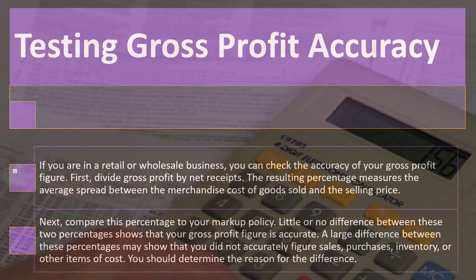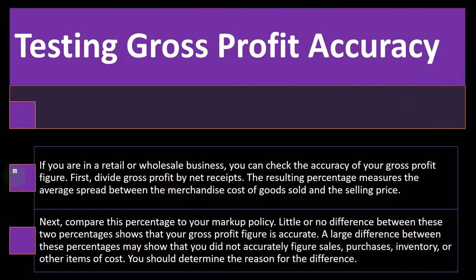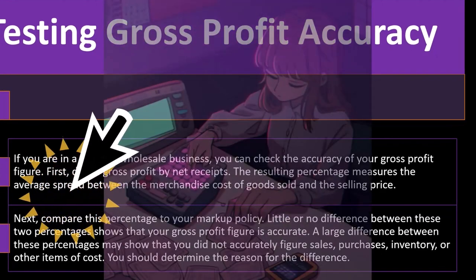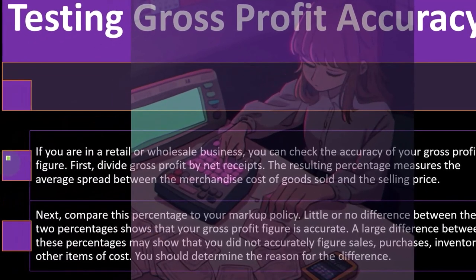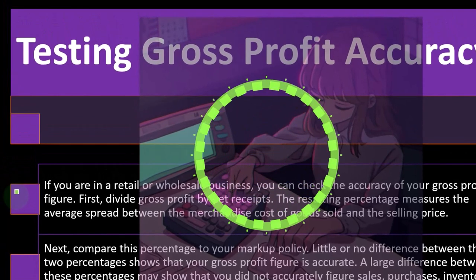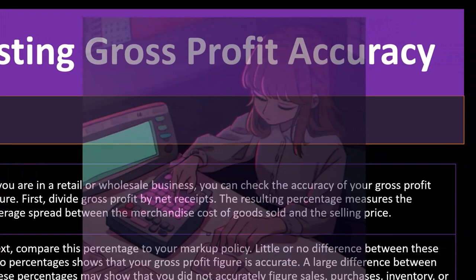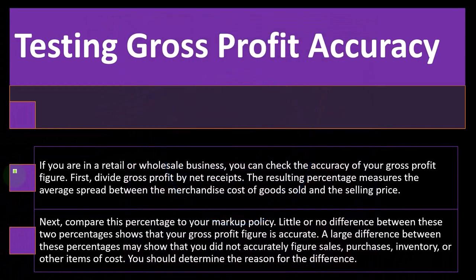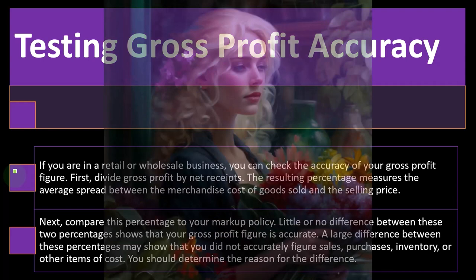You can look at these ratios to get a general idea of whether they're similar to your markup ratios, and to determine if the gross profit looks reasonable. Little or no difference between the two percents shows that your gross profit figure is accurate. A large difference may show that you did not accurately figure sales, purchases, inventory, or other cost items — and you should determine the reason for the difference. The IRS may also look at similar ratios from similar industries; if your ratio looks widely different from the market average, that could be a red flag.